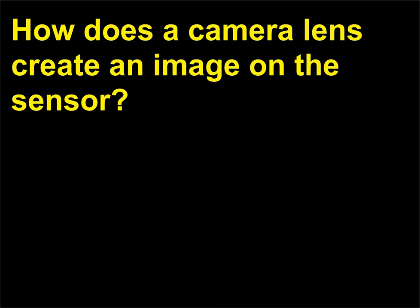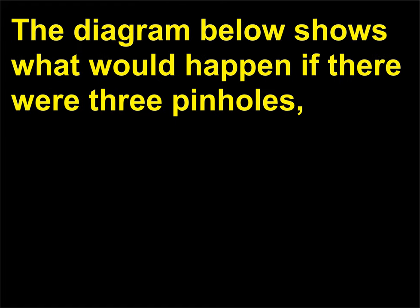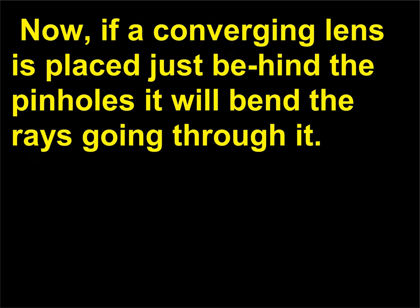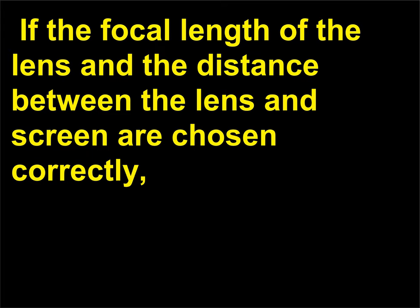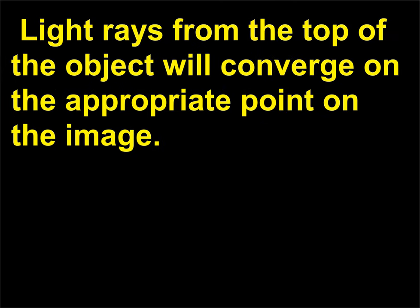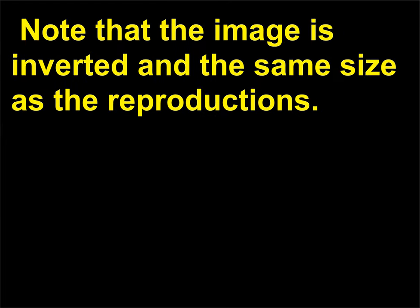How does a camera lens create an image on the sensor? The diagram shows what would happen if there were three pinholes, each creating an inverted reproduction of the object. If a converging lens is placed just behind the pinholes it will bend the rays going through it. If the focal length of the lens and the distance between the lens and screen are chosen correctly, then the three reproductions from the pinholes will all be at the same location. Light rays from the top of the object will converge on the appropriate point on the image, which is inverted.